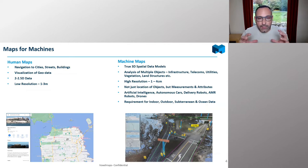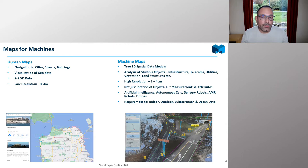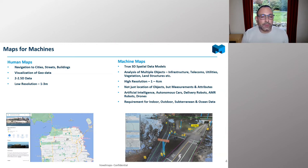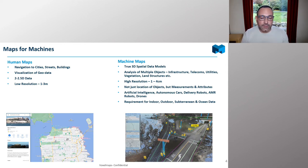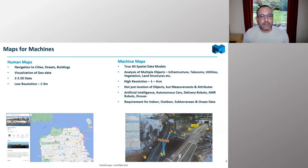I want to begin by talking about the concept Brian mentioned — maps for machines — which is really the focus of what we do here at VoxelMaps. What's the difference between a human map and a machine map? Human maps — we're all used to them on our phones, cars, or the web. They're primarily around navigating people to an address, with a secondary use case around visualization. The majority of data for humans is 2D, with some 3D aspects that are still pretty low resolution — one to three meters in terms of accuracy.